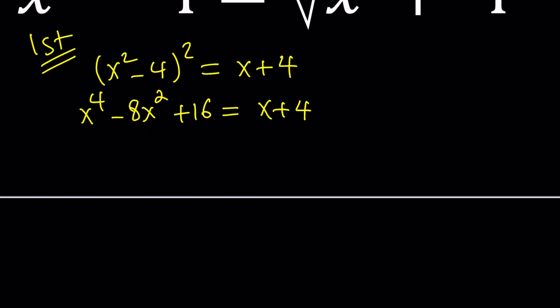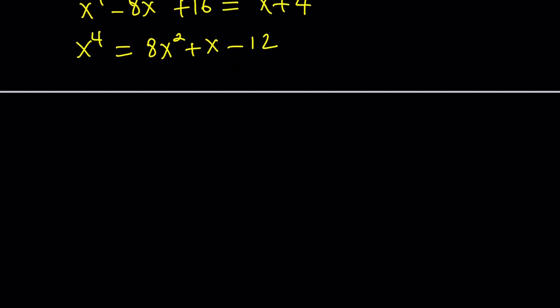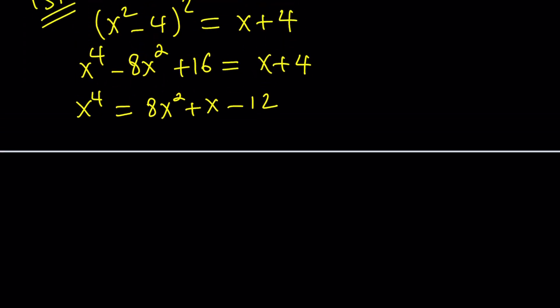One approach is solving a quartic by turning it into something more manageable — in other words, we're going to turn this into a cubic equation. I'm going to go ahead and isolate x to the fourth, and then add something to both sides so that the left-hand side becomes a perfect square.